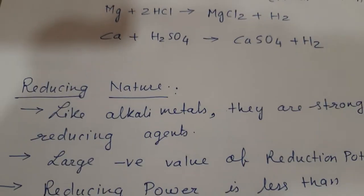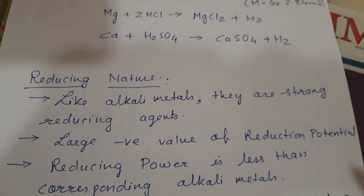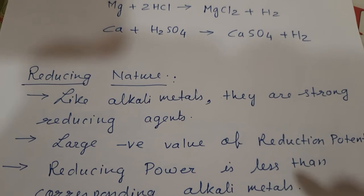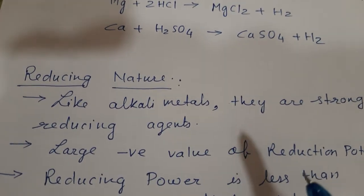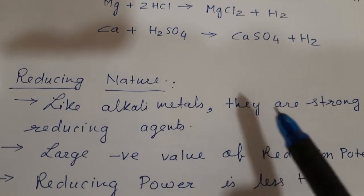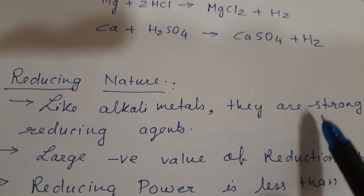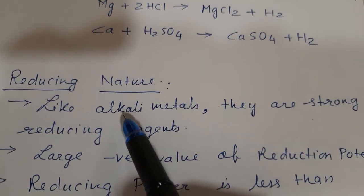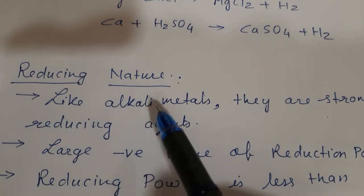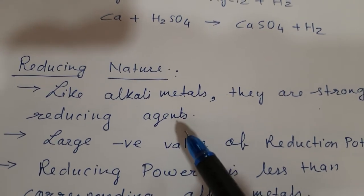Now comes reducing nature. Like alkali metals, alkaline earth metals are all very strong reducing agents. But when compared with alkali metals, the alkali metals will be more reducing — in both alkali and alkaline groups.